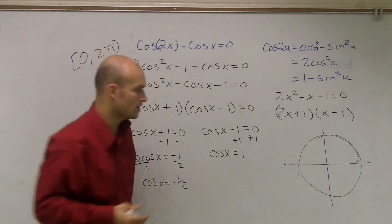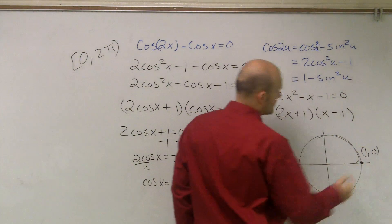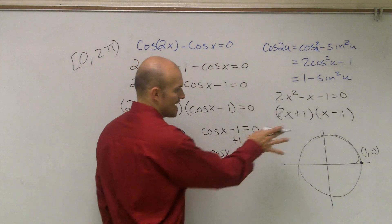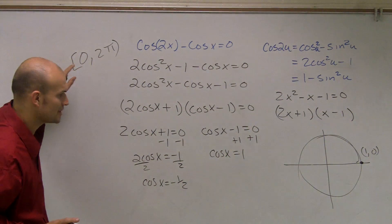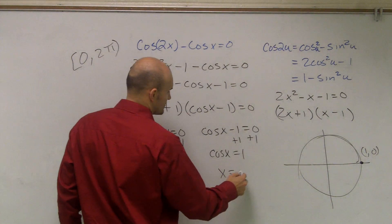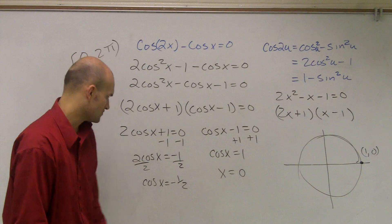So first of all, when does cosine equal 1? Remember cosine is our x value. Well, if you look at our first point, that's going to be 1, 0. The angle at that point, since it is included with 0, is going to be x equals 0. So that's going to be our angle when cosine of x equals 1.